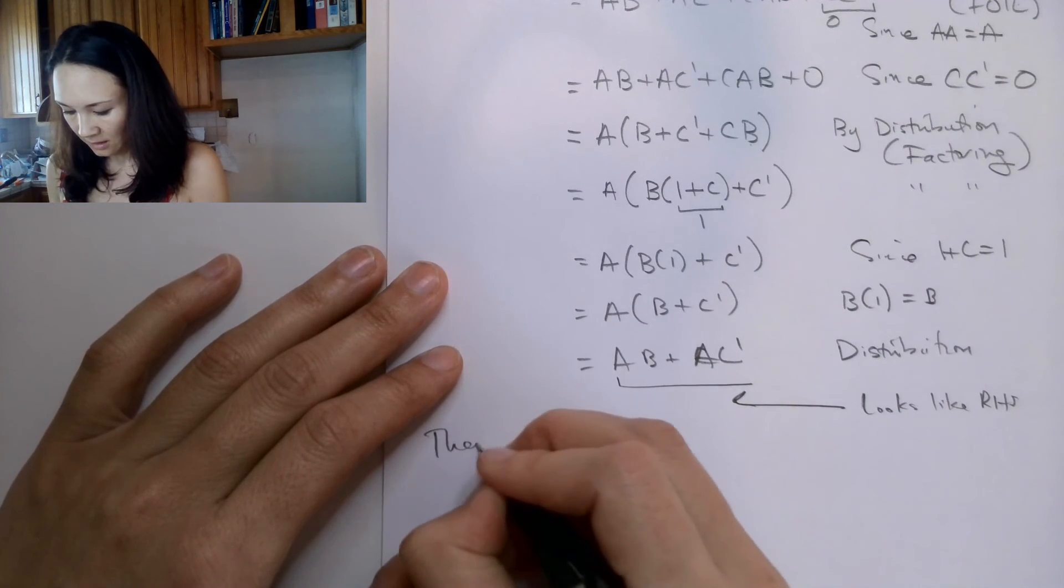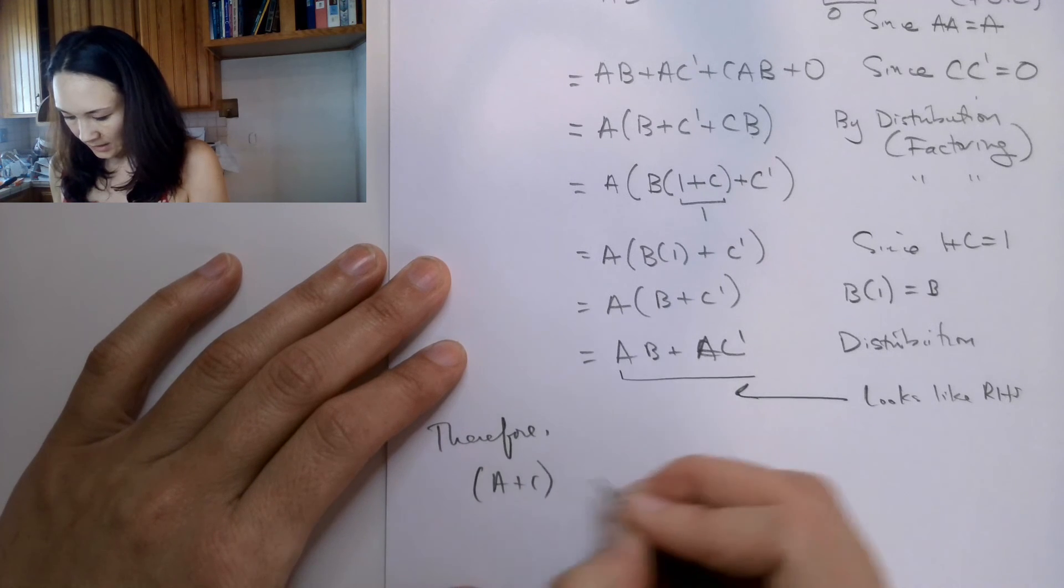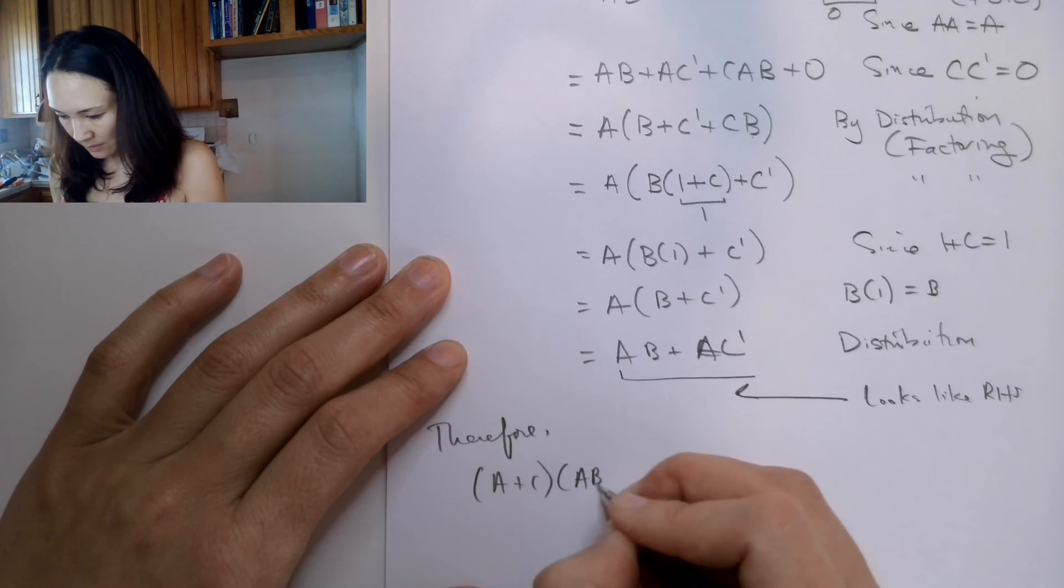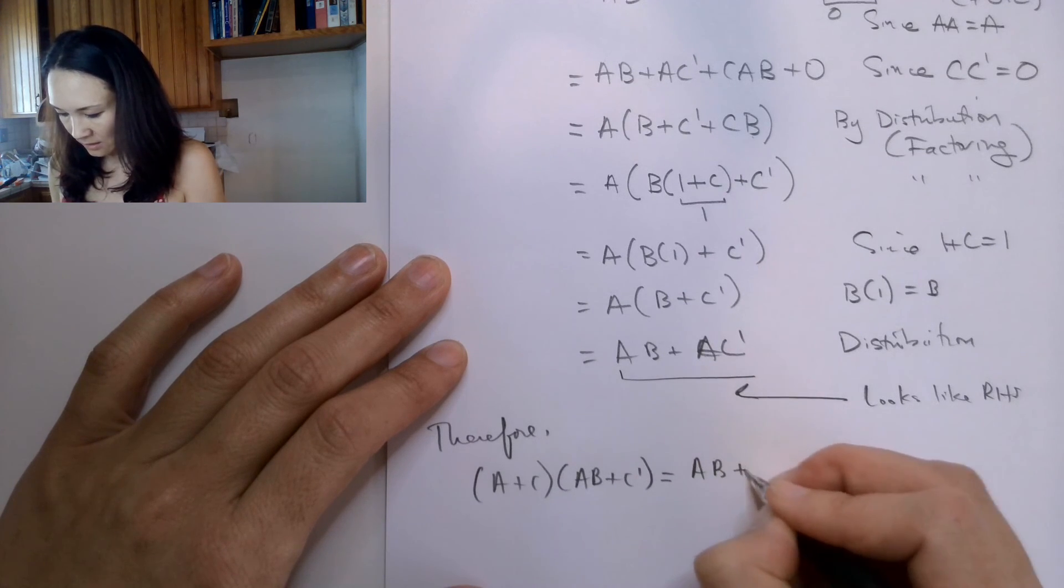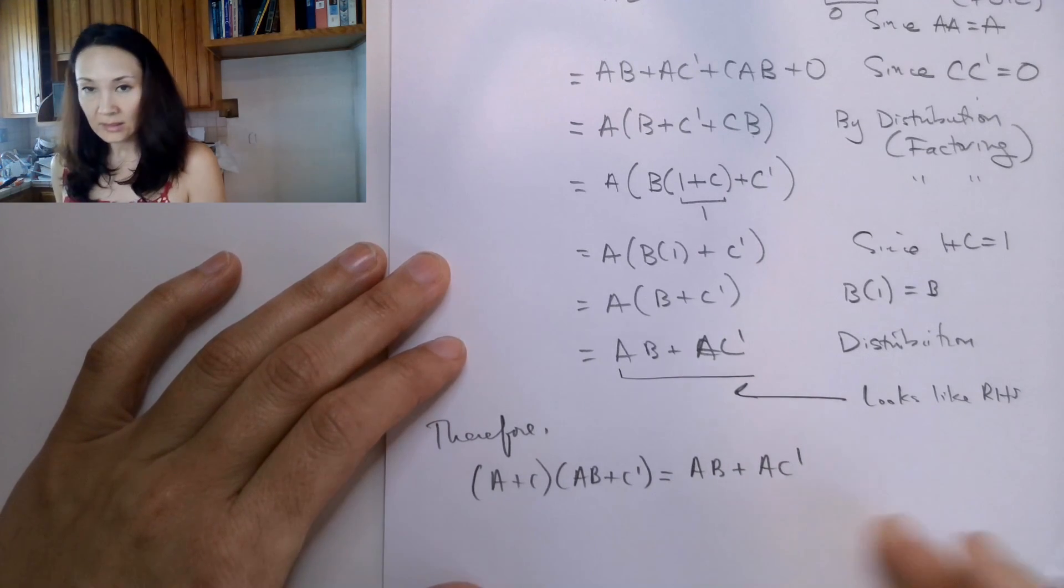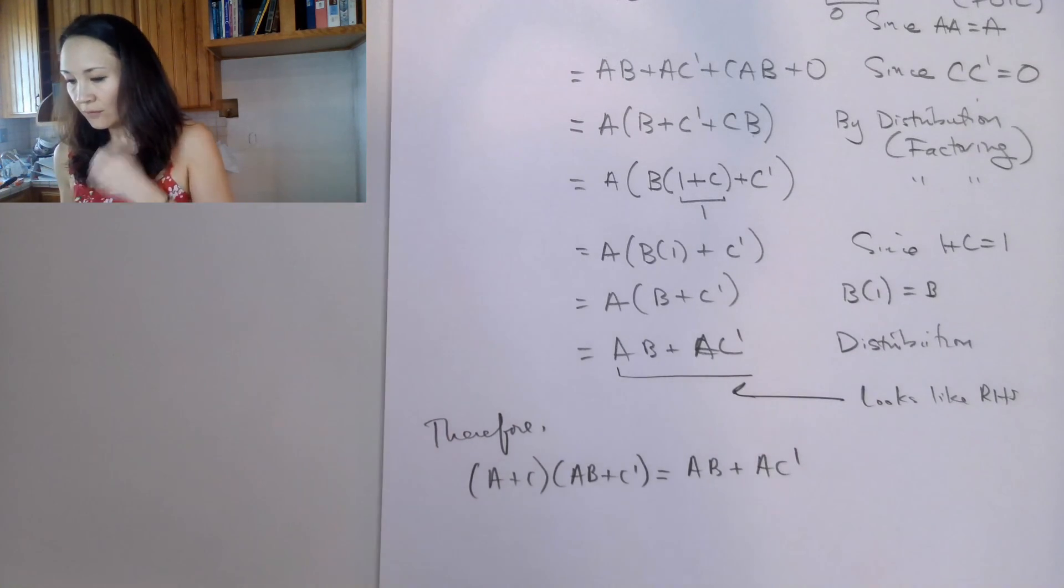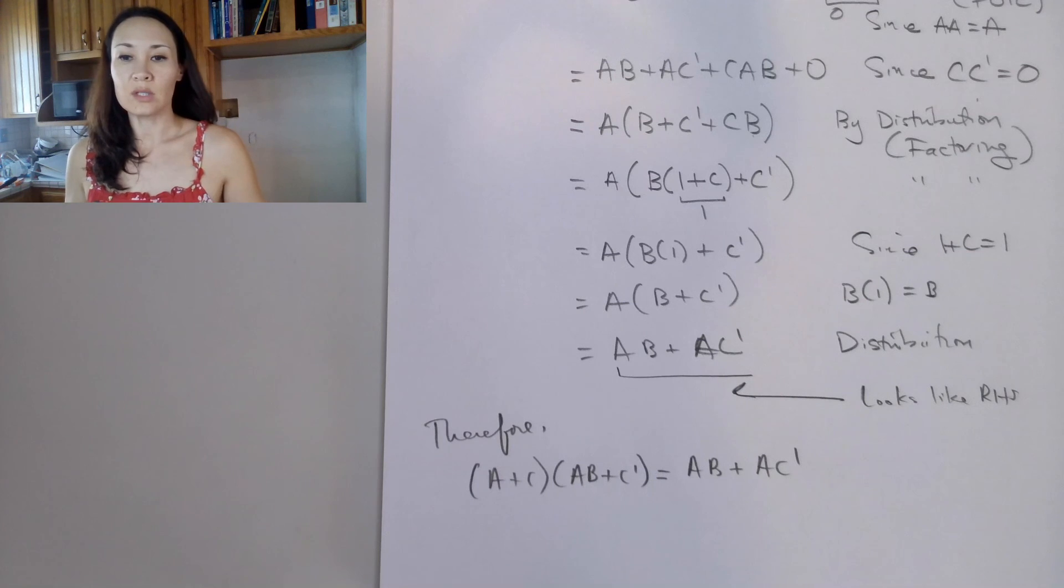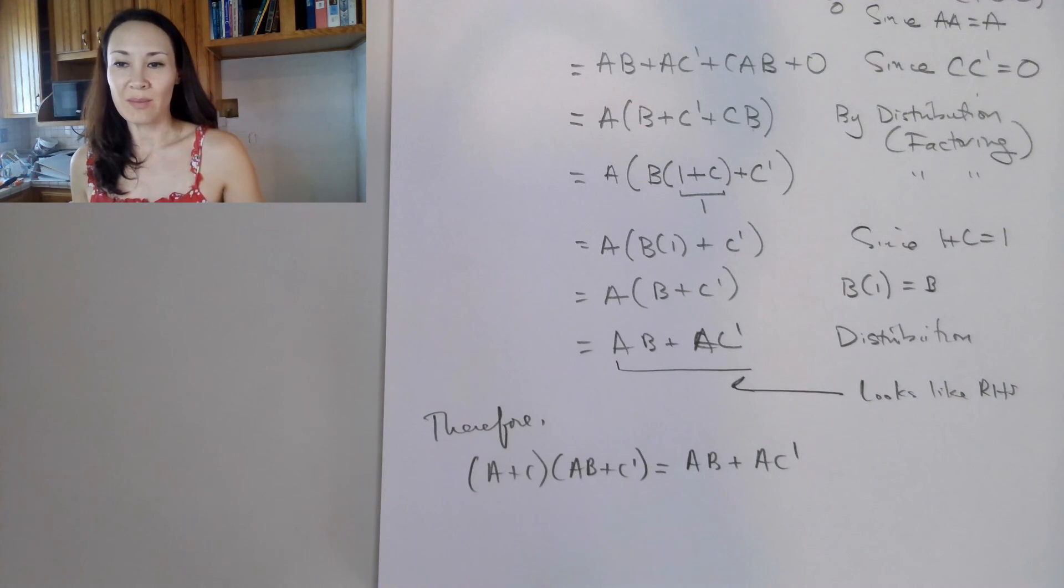So then I can say, therefore, A or C anded with A, B or C naught is equal to A, B or A, C naught. And this constitutes a proof using Boolean algebra. So let me know if you have questions about doing these proofs. We can also prove using truth tables, which we'll do later in the module.